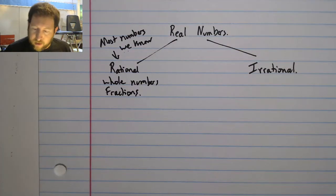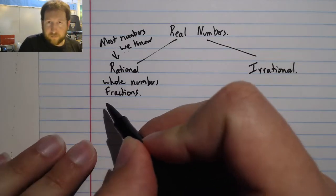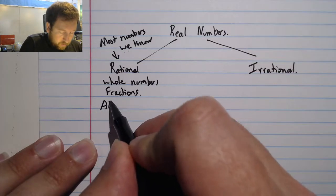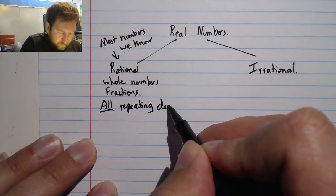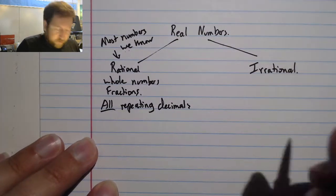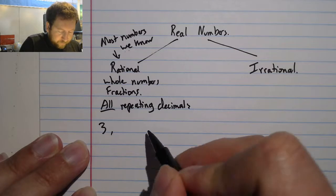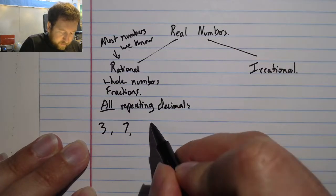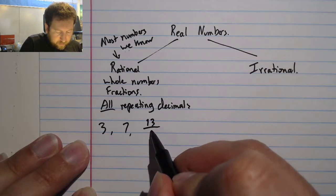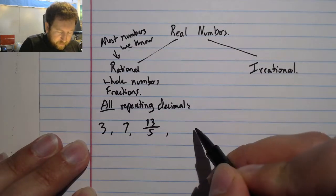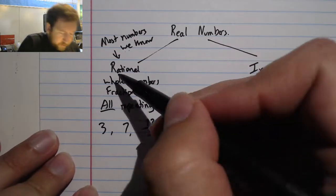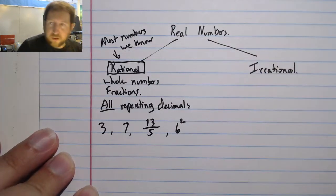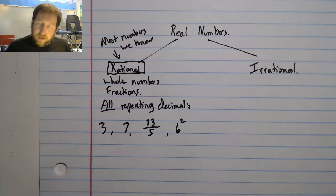These would be numbers like whole numbers, fractions, and most numbers that we can write out, and even some repeating decimals—actually all repeating decimals. For example, they could be numbers like 3, like 7, like 13/5, like 6². All of these are rational numbers.